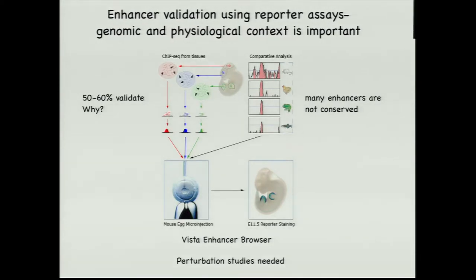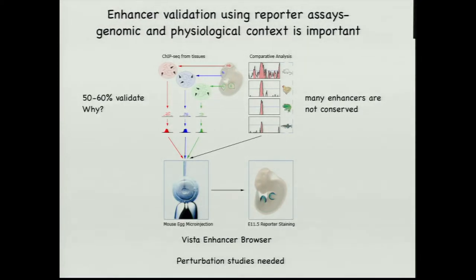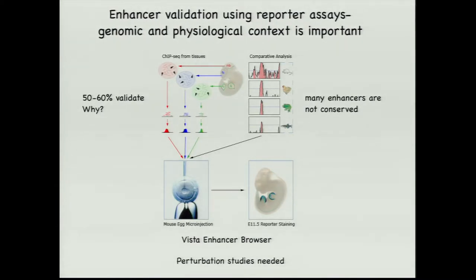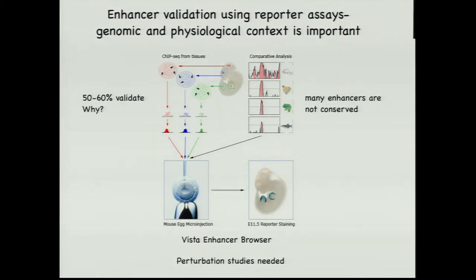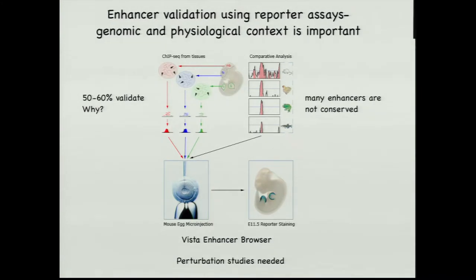We often use evolutionary data and the minimal region of conservation to define what is driving an enhancer. But in many cases, enhancers are not conserved. In combination with reporter assays, seeing activity is suggestive but not always definitive. I think more perturbation studies are needed to really understand what an enhancer is and what activates it.